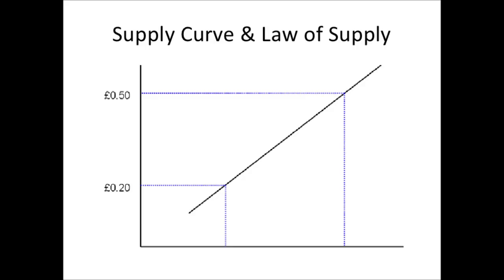A simple supply curve: price is on this axis here and quantity is on this axis here. All it's basically saying is that the quantity supplied responds to the price. As price increases from 20p to 50p — let's say this is a market for pencils — the quantity supplied will increase in a reasonably proportional amount.